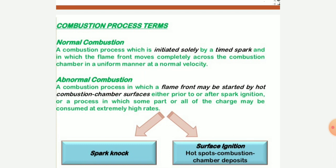Why are we studying all these phenomena? To understand the actual cycle process in the running of an IC engine — what are the effects, the causes, and the outcomes while the cycle is actually processing. We must keep in mind that the temperature in the combustion chamber reaches up to 1400 degrees Celsius, which is above the self-ignition temperature of the fuel. That is why all conditions must be controlled to achieve smooth, economical, and efficient outcomes from the IC engine.